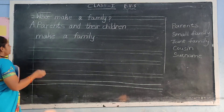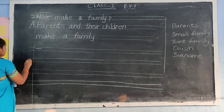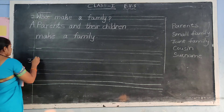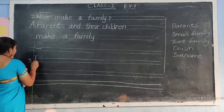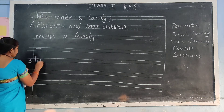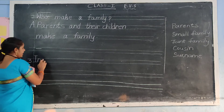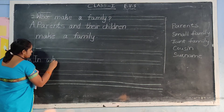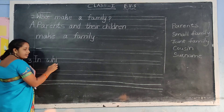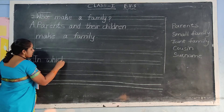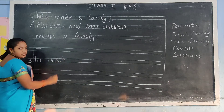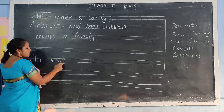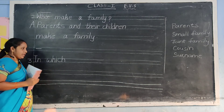Next line. Leave one line. Three in the margin. Capital letter I-N — in. Finger gap. W-H-I-C-H — which. In which? Finger gap.